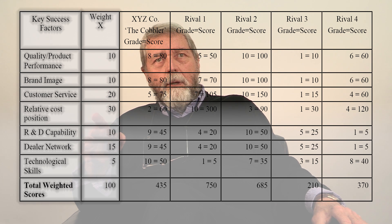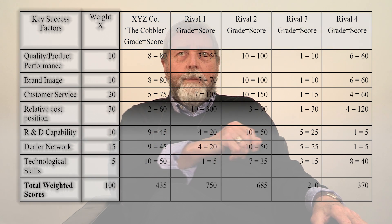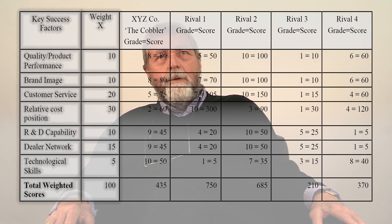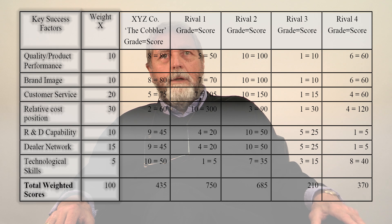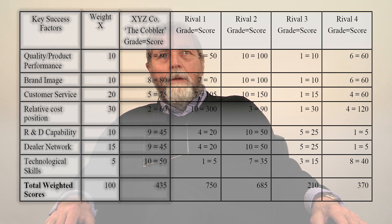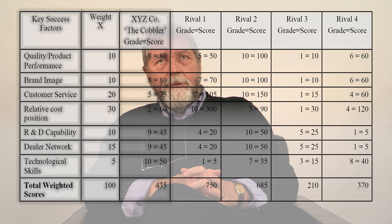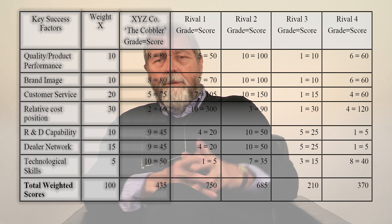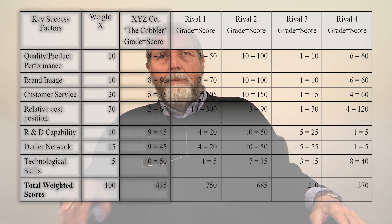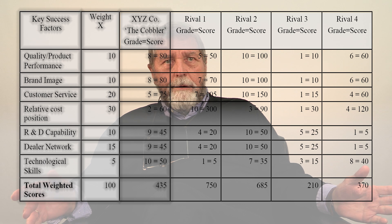In step three, identify the firms being compared across the top of the table. Record the names of the firms being evaluated. In the first column, identify the primary firm under consideration — in this case, your firm. In the remaining columns, record the names of the other firms, the rivals, the competition. We have identified your firm as the XYZ Company in the first column and your rivals as Rival 1, 2, 3, and 4, depending on the numbers determined by your research.